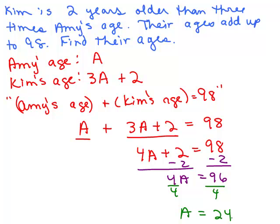We'll see if I did that right. So if A is 24, then Amy's age is 24, right? And how would I get Kim's age? Well, I'd do 3A plus 2, so I'd have to do 3 times 24. So I have to do 24 times 3, which is 72, and add 2 more to it. So Kim is 74.